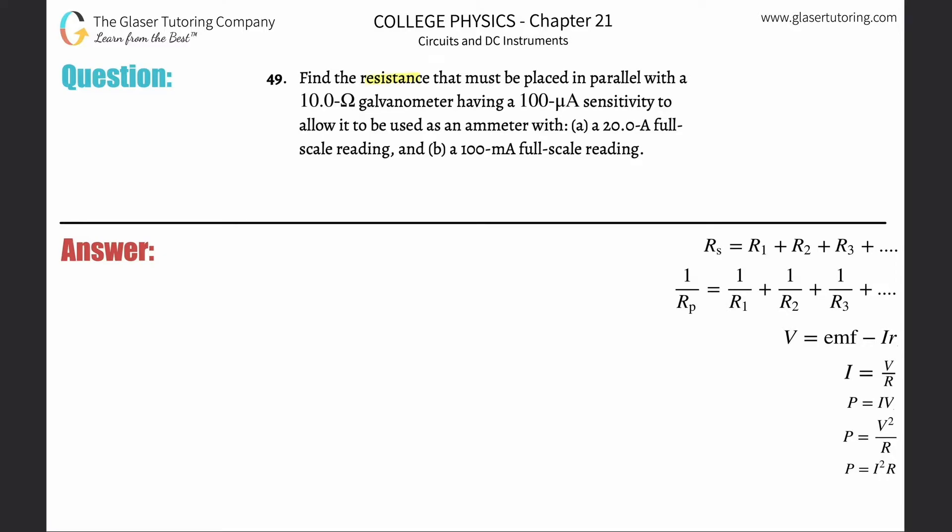Number 49: Find the resistance that must be placed in parallel with a 10 ohm galvanometer having a 100 microamp sensitivity to allow it to be used as an ammeter with a 20 amp full scale reading.